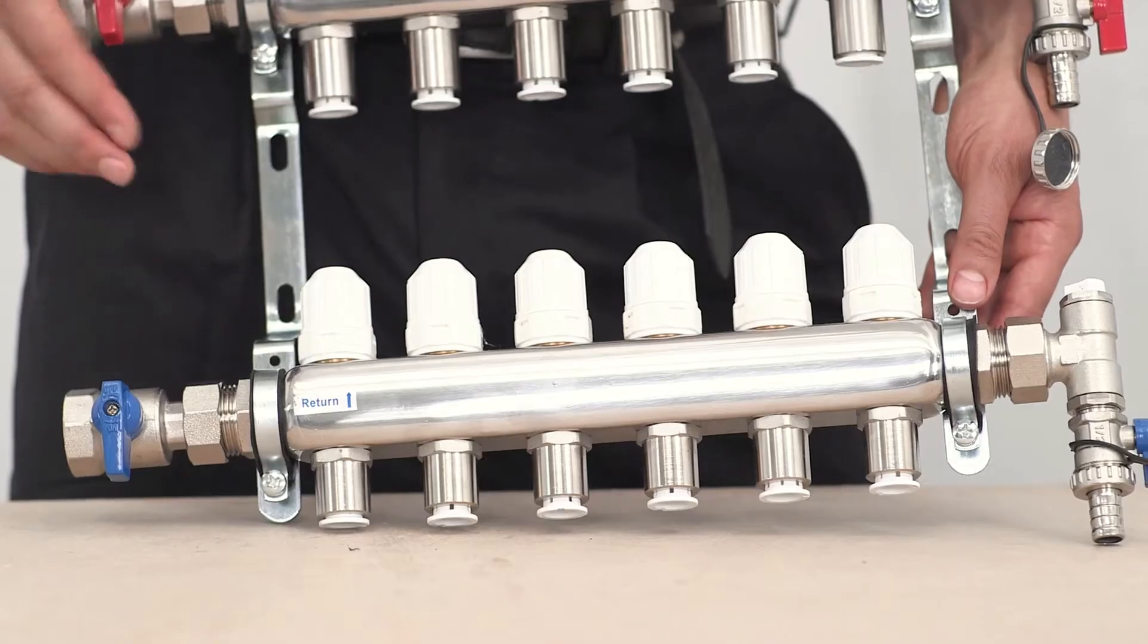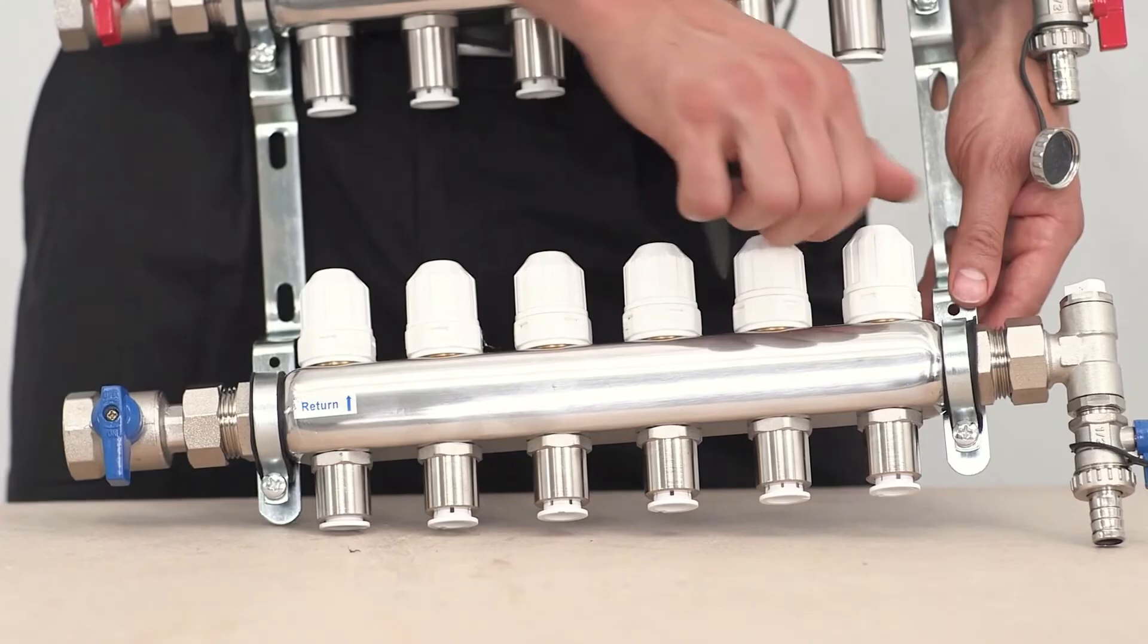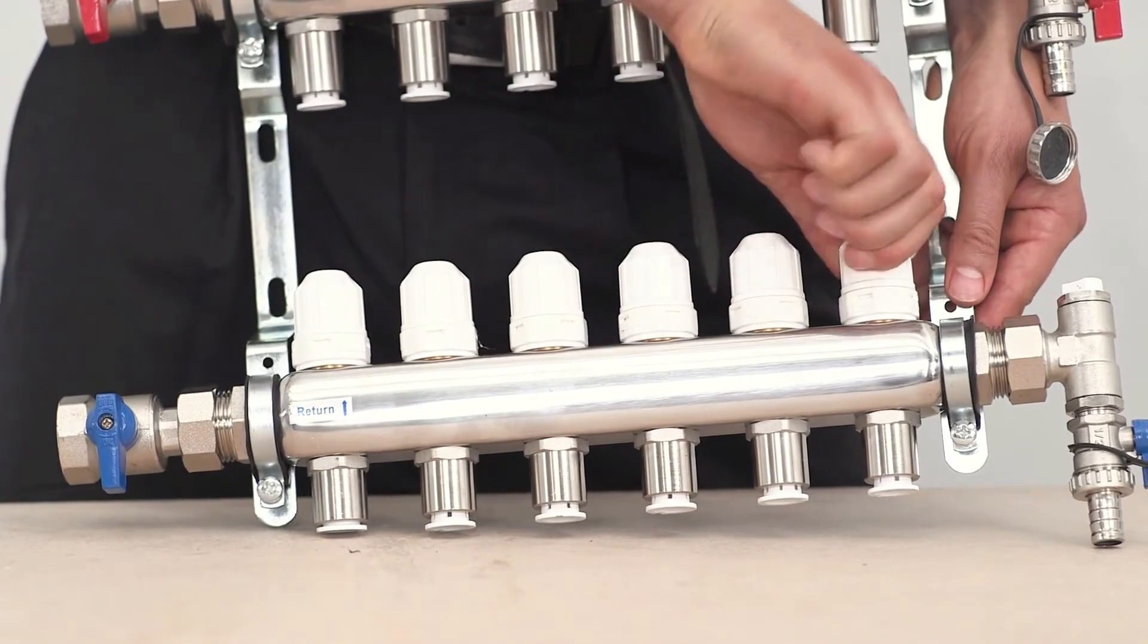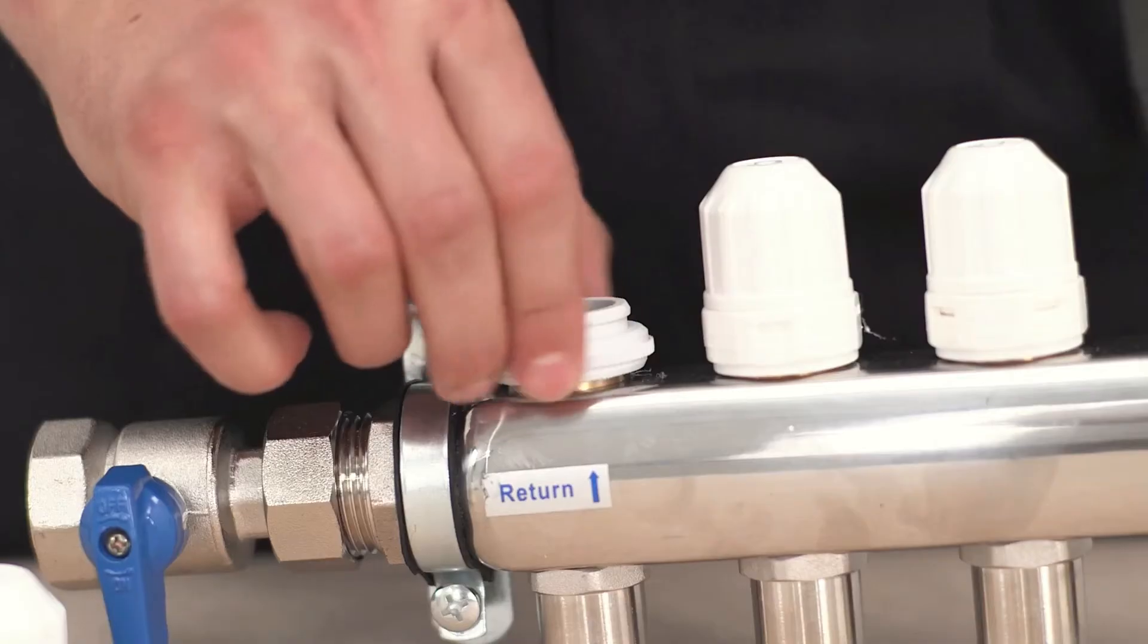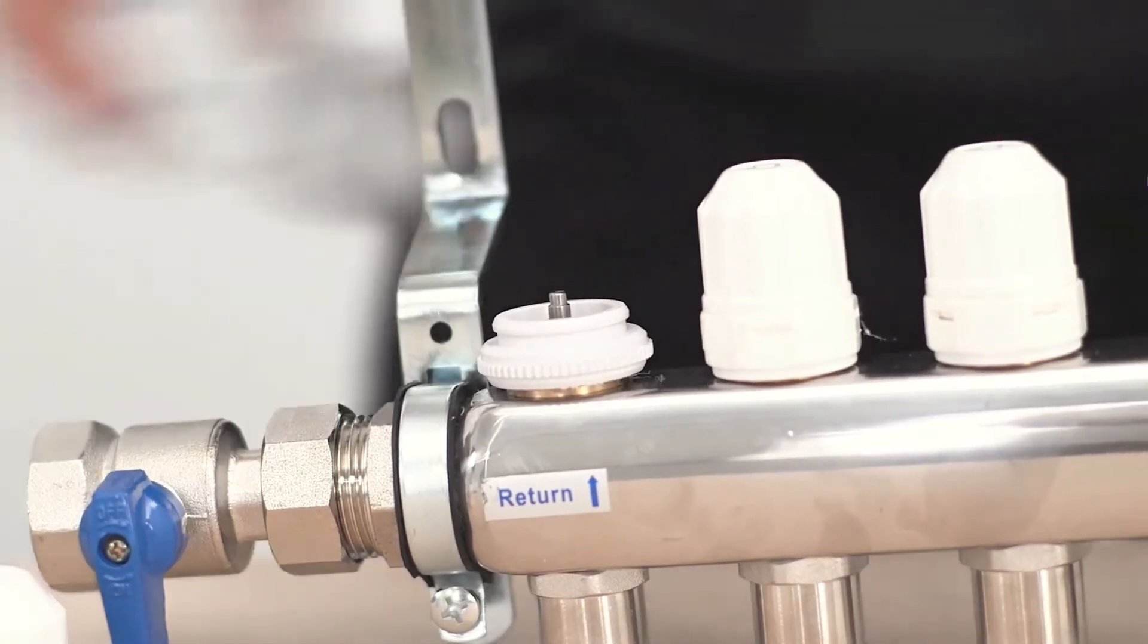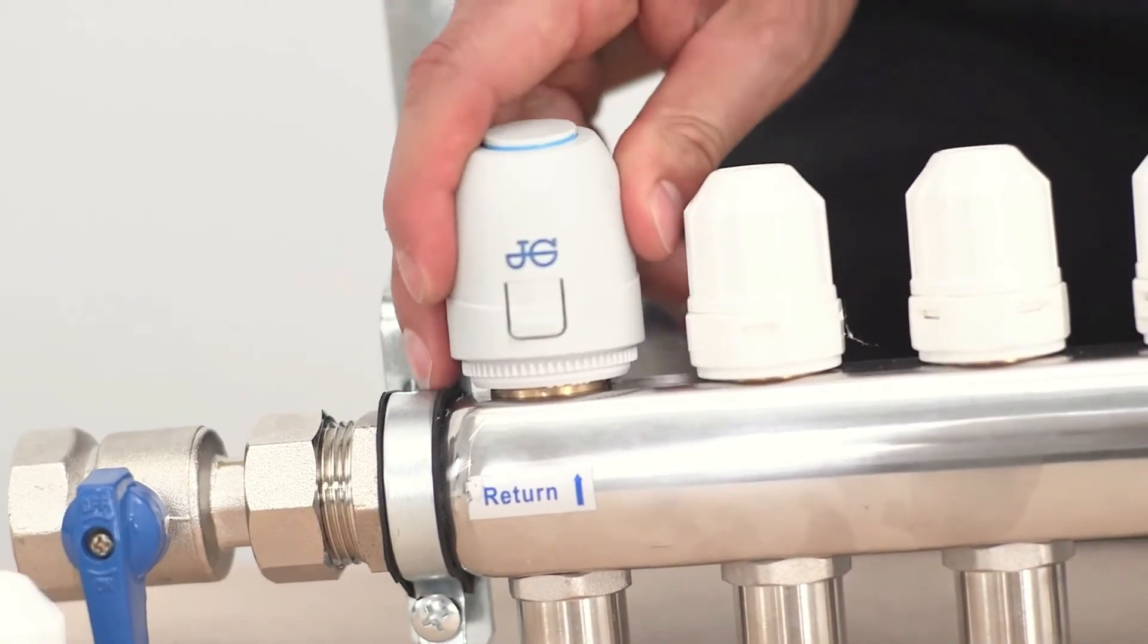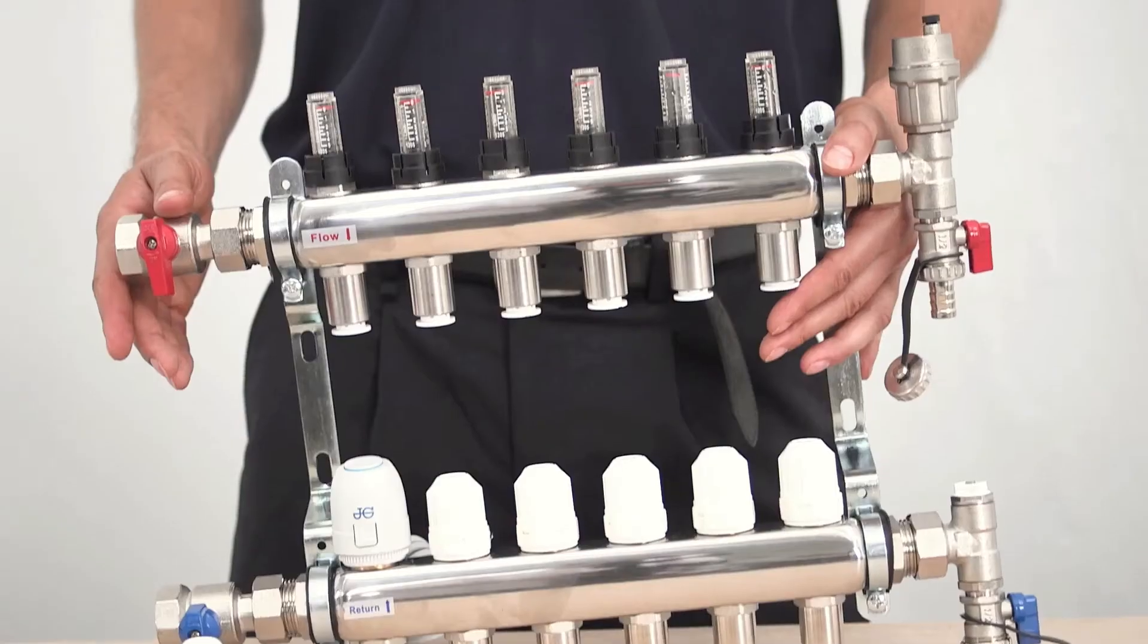We have temporary decorators caps on the bottom rail. These are used for isolation and adjustments of the circuits and will be replaced by electrically operated actuators at the commissioning stage. The actuators allow the user to control each room individually.